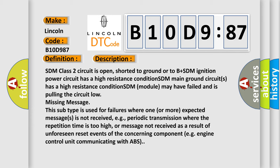This subtype is used for failures where one or more expected messages is not received, e.g., periodic transmission where the repetition time is too high, or message not received as a result of unforeseen reset events of the concerning component, e.g., engine control unit communicating with ABS.